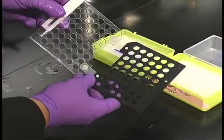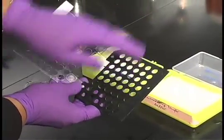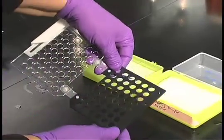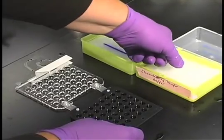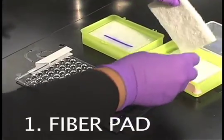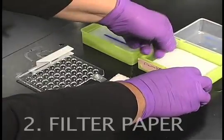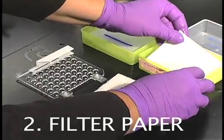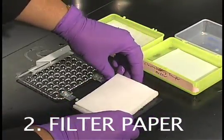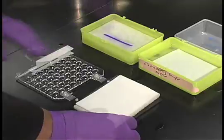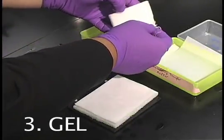When we put together our gel sandwich, make sure that you arrange this in exactly the right order. Put your black side of your gel sandwich cartridge down first. Put a fiber pad, then a piece of filter paper. After the filter paper, we'll put our gel in place.